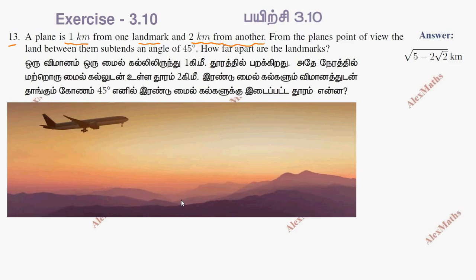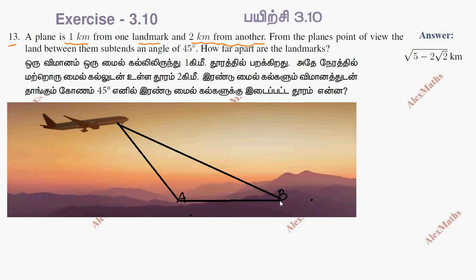We have landmark A and another landmark B. One landmark is 1 km and another landmark is 2 km. This is the horizontal distance between the two landmarks. From the plane's point of view, the land between them subtends an angle of 45 degrees.